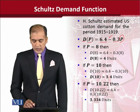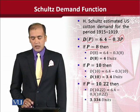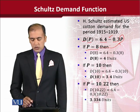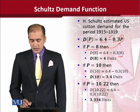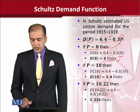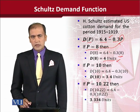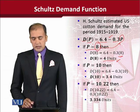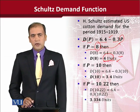Now let us assume that the value of the variable P, that is price, is 8. Once we know the value, we can substitute it into Schultz's demand function. Solving the equation using simple algebra, the answer is 4 units. So it shows that if price is 8 units, the quantity demanded would be 4 units.